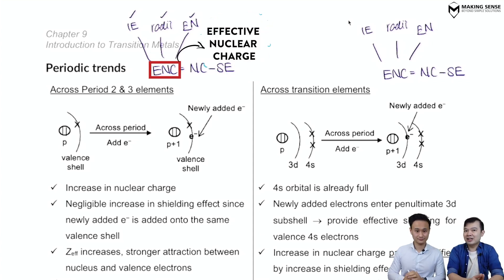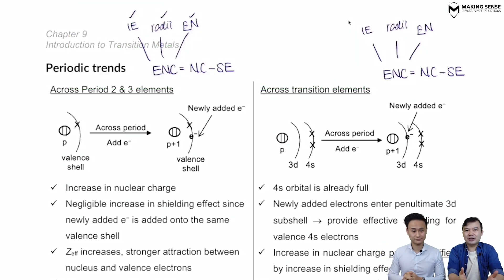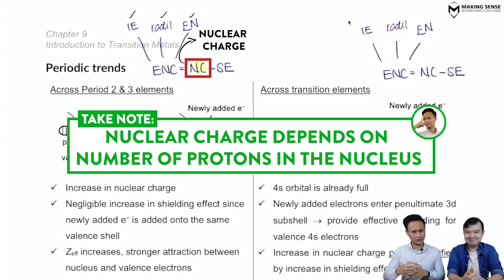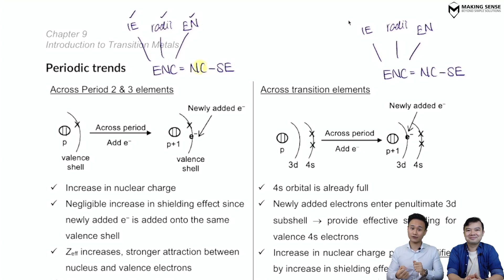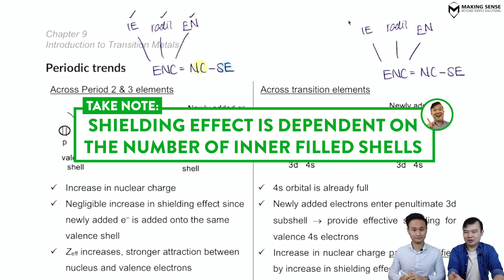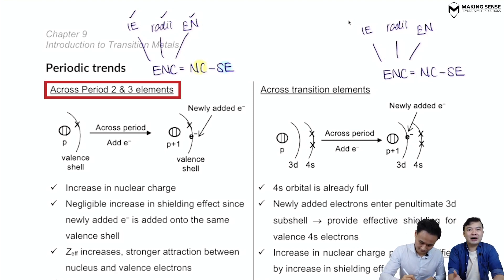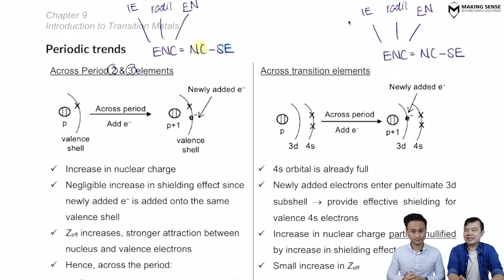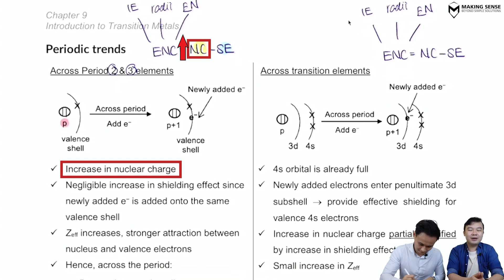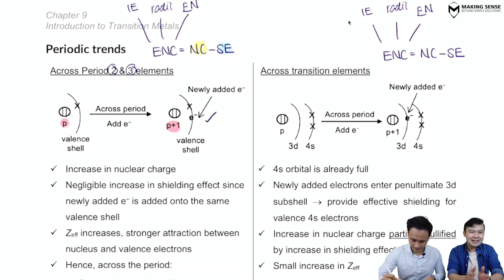The effective nuclear charge is the attraction from the nucleus to the valence electrons — how strong that electrostatic attraction is. It depends on two factors: first, the nuclear charge, which depends on the number of protons in the nucleus; and second, the shielding effect — the number of electrons that shield your valence electrons from the nucleus, dependent on the number of inner electron shells. Across a period, nuclear charge increases as proton number increases, but the shielding effect remains relatively constant since the number of inner shells stays the same. Overall, the effective nuclear charge increases across the period.